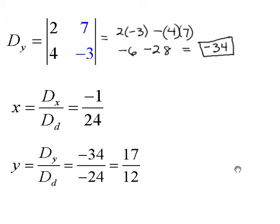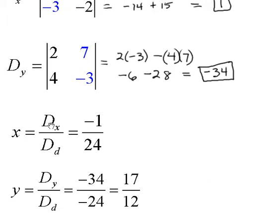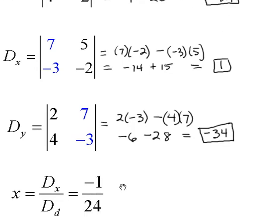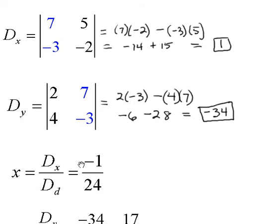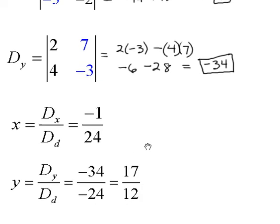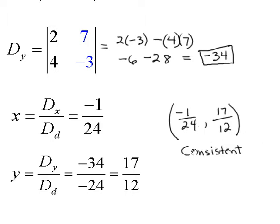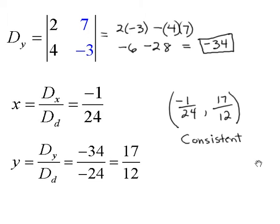To put them together, x equals the numerator of x over the denominator. The numerator was 1, and the denominator was negative 24. Since mathematicians don't like negatives in the denominator, we multiply numerator and denominator by negative 1, giving negative 1 over positive 24. Then y equals the numerator of y (negative 34) over the denominator (negative 24), which reduces to 17 twelfths. Our ordered pair is x equals negative one twenty-fourth, y equals 17 twelfths. Recalling from Chapter 3 vocabulary, since there is a solution, this system is consistent — and because the two equations would intersect at one point, they are independent.